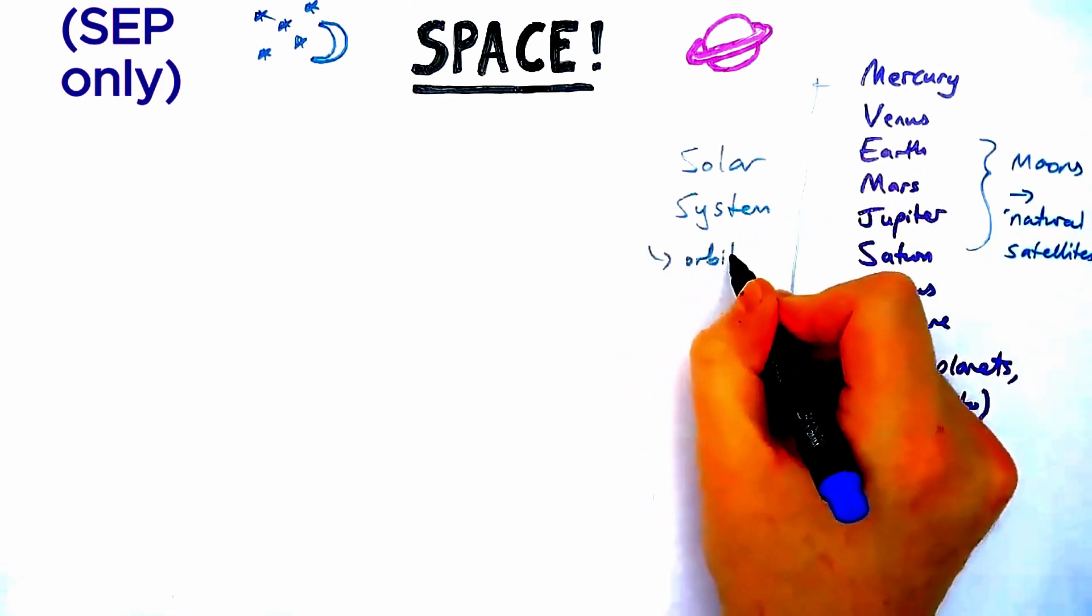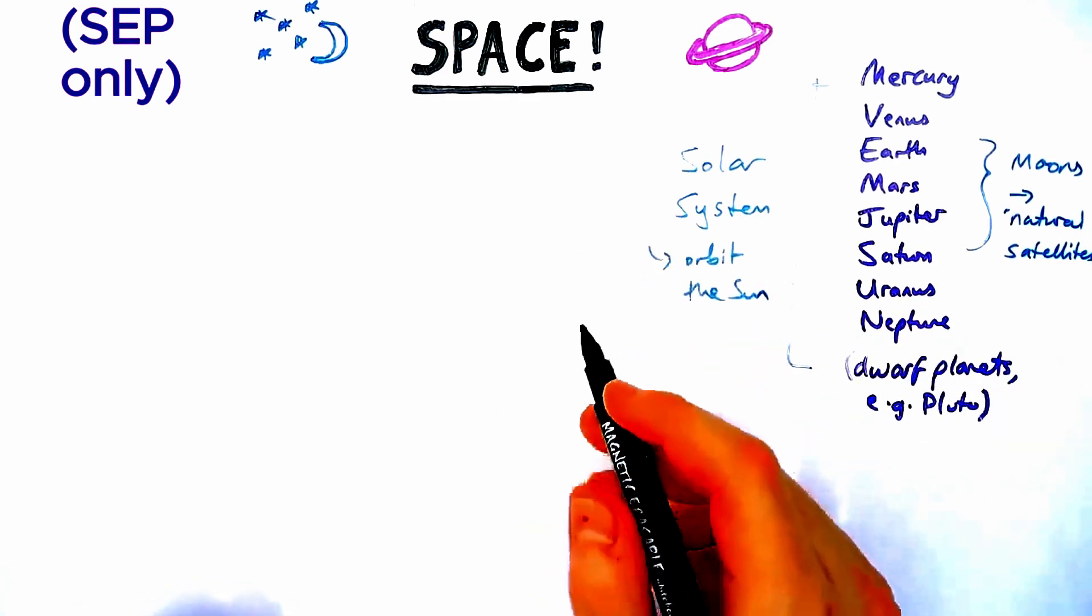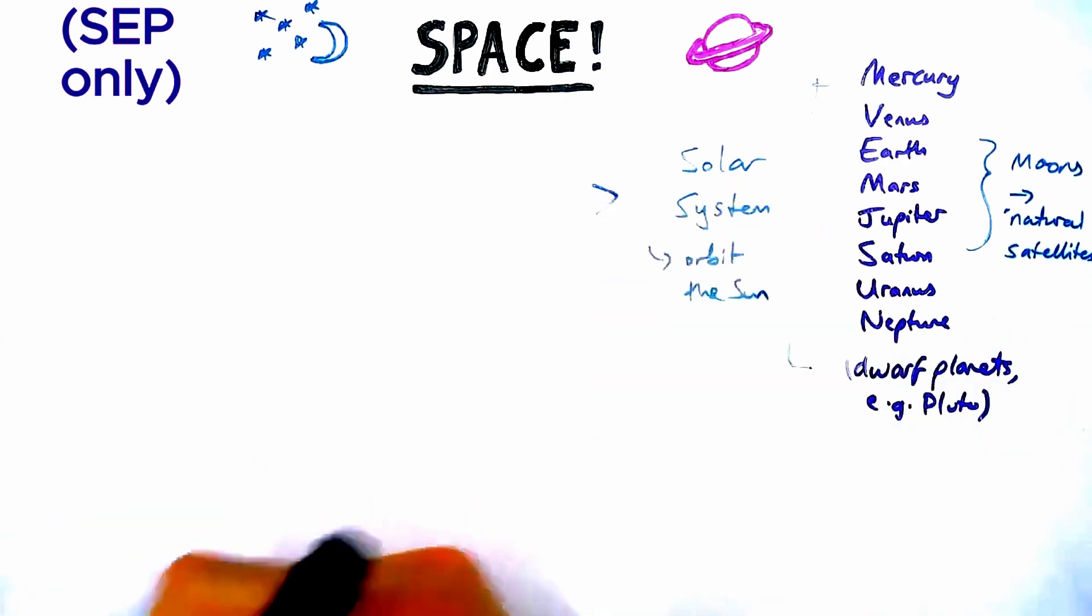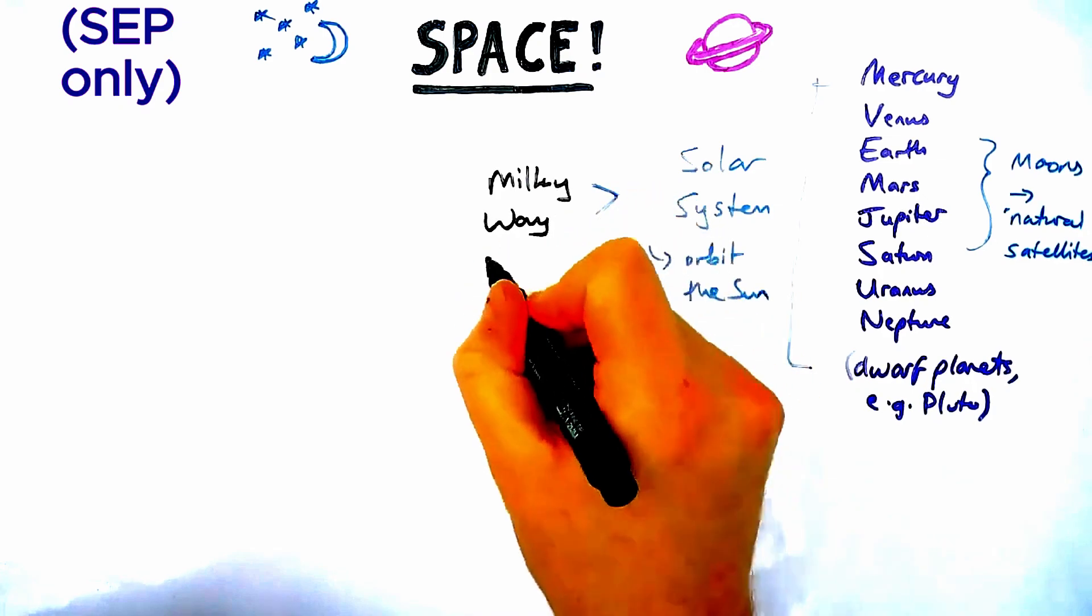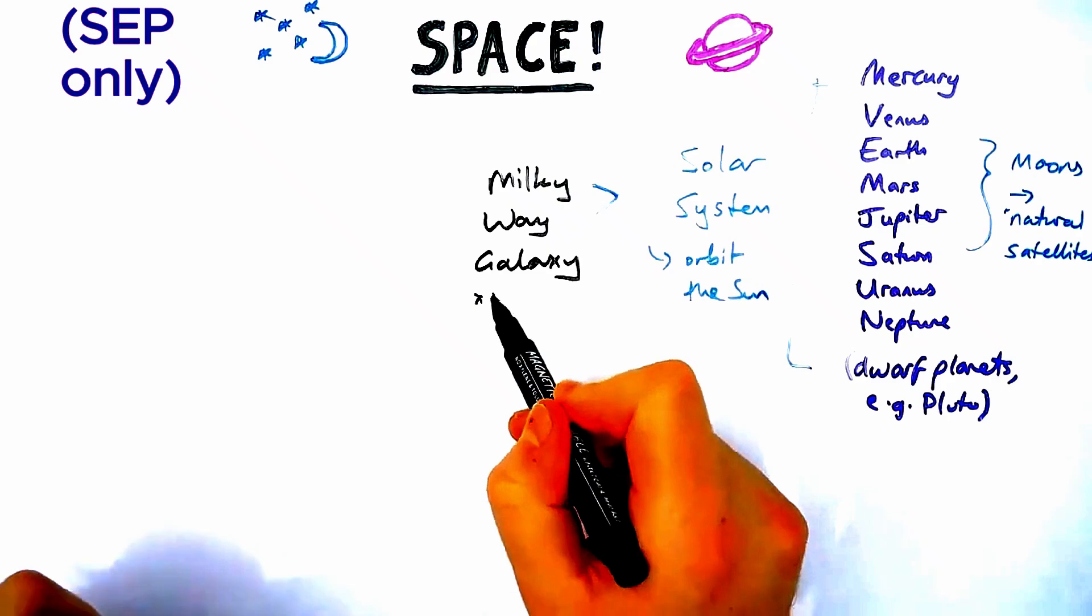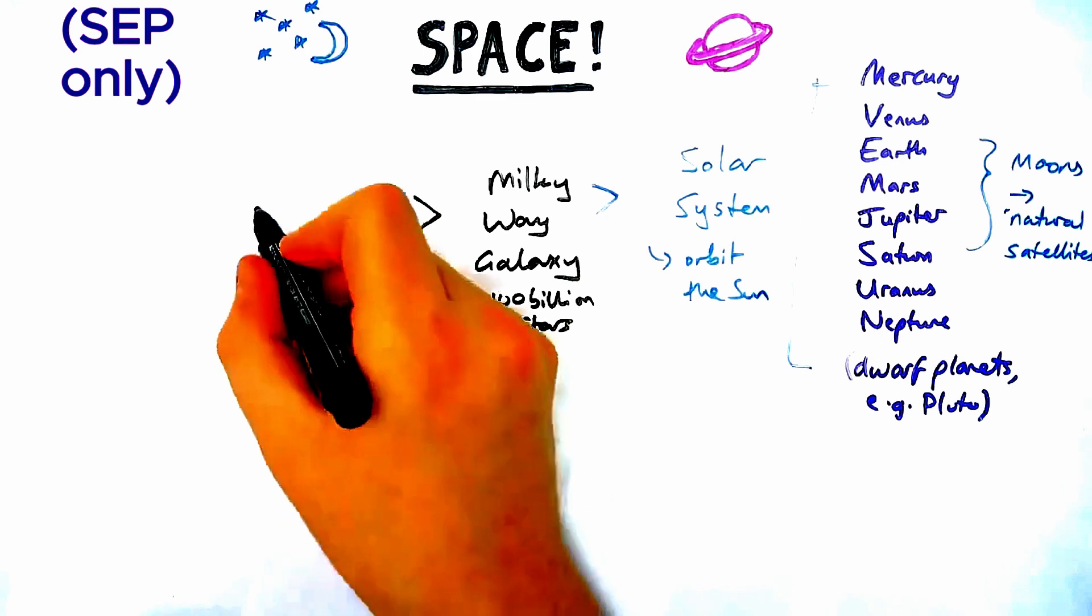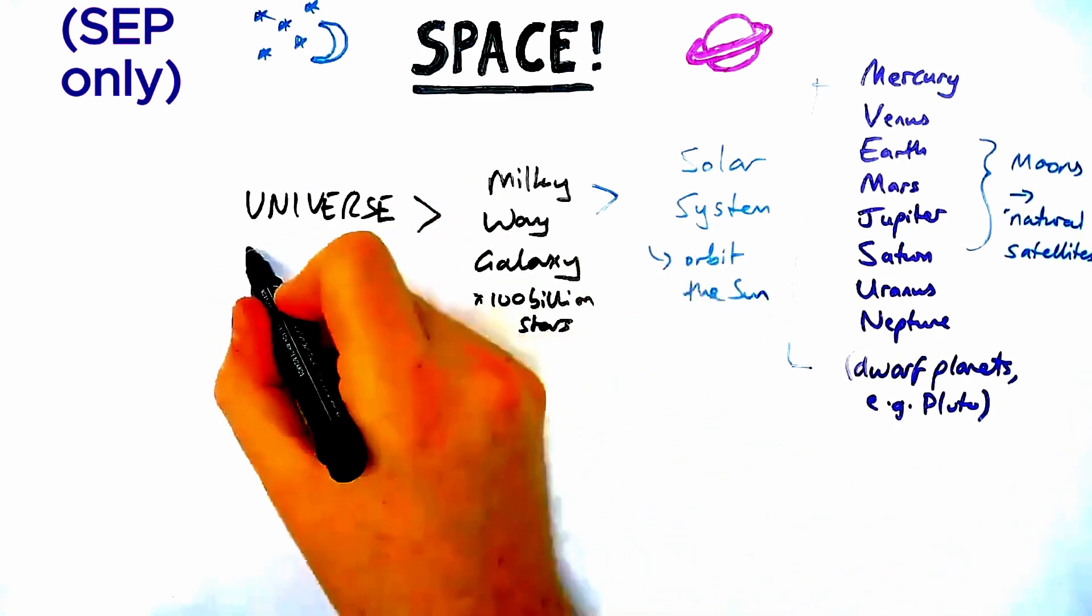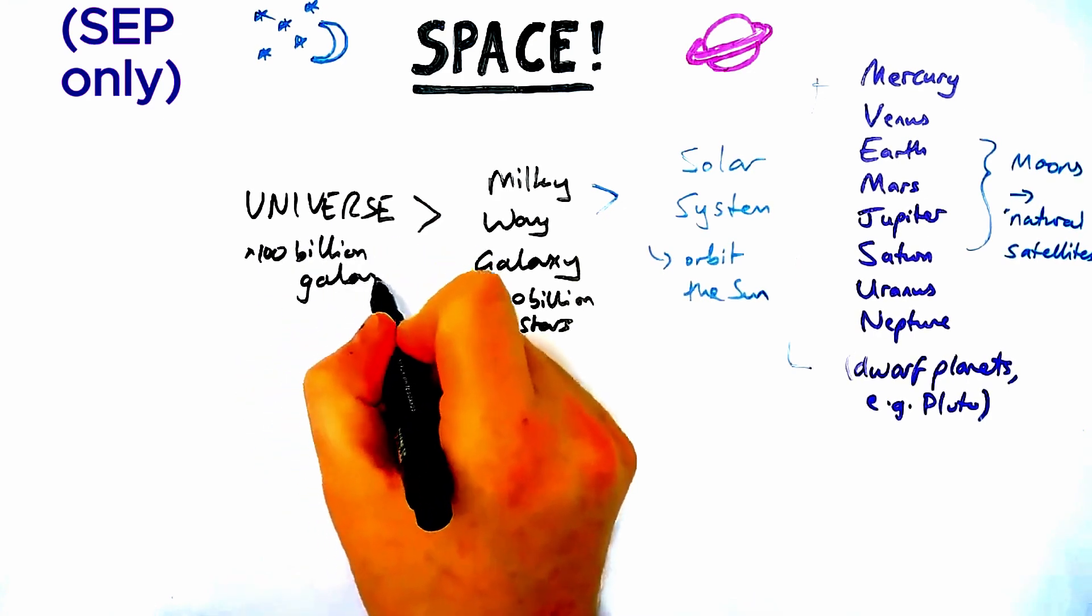All these planets, moons, asteroids, and comets make up the solar system, which is made up of things that generally orbit the sun. Our solar system is one of many in our galaxy called the Milky Way, which is made up of approximately 100 billion stars. Bigger than the Milky Way, we have the universe overall which contains many different galaxies - probably more than 100 billion.